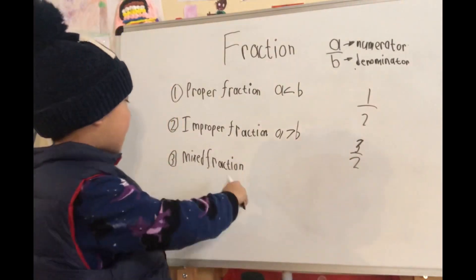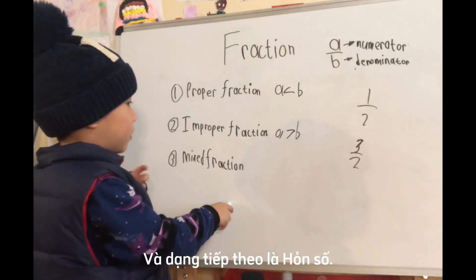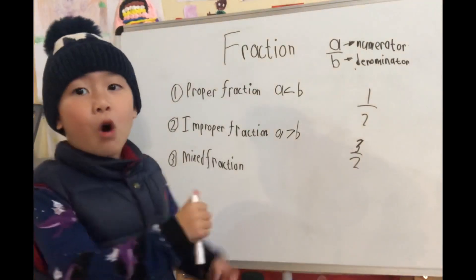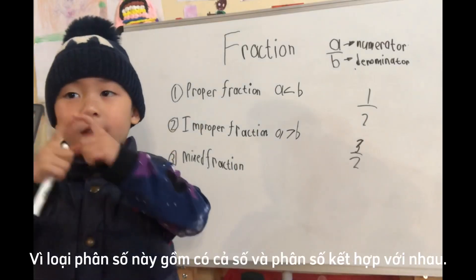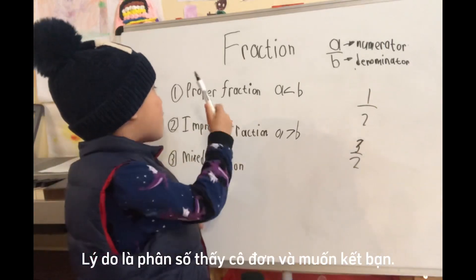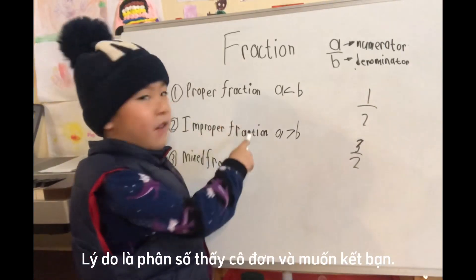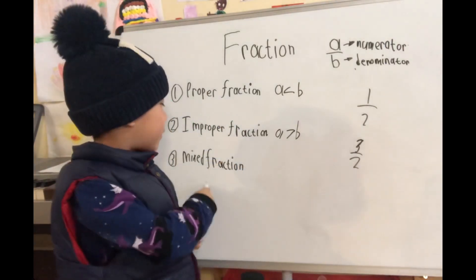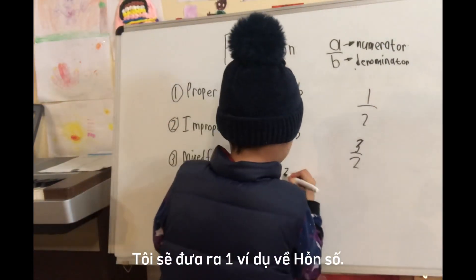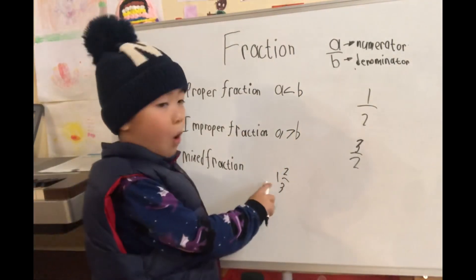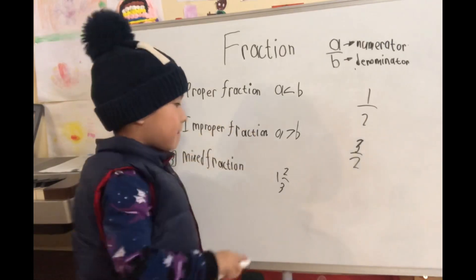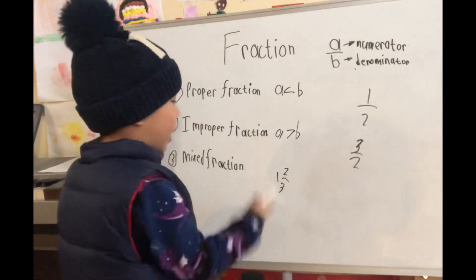And the next type of fraction is mixed fraction. Do you know why it's mixed fraction? It's a whole number in itself. Mixed will make friends — both fractions only. Mixed joins with proper fraction. That's why it's mixed fraction. I'll give you one example: 1 and 2 over 3. You see? 1 is a whole number, 2 over 3 is a proper fraction. That's called a mixed fraction.